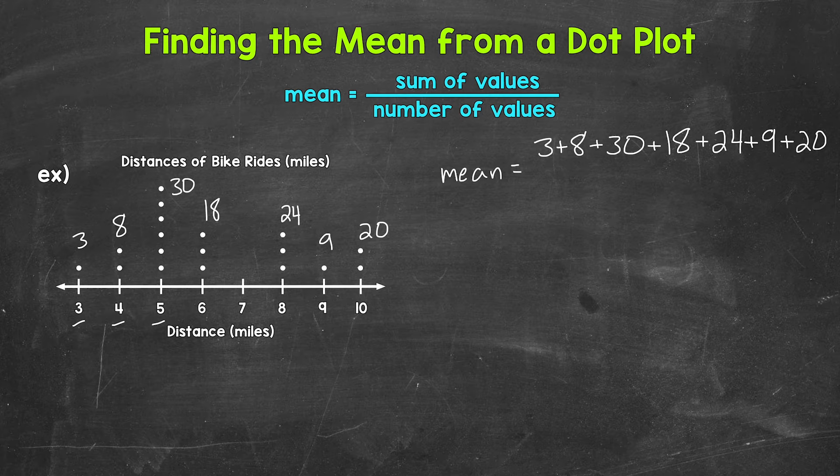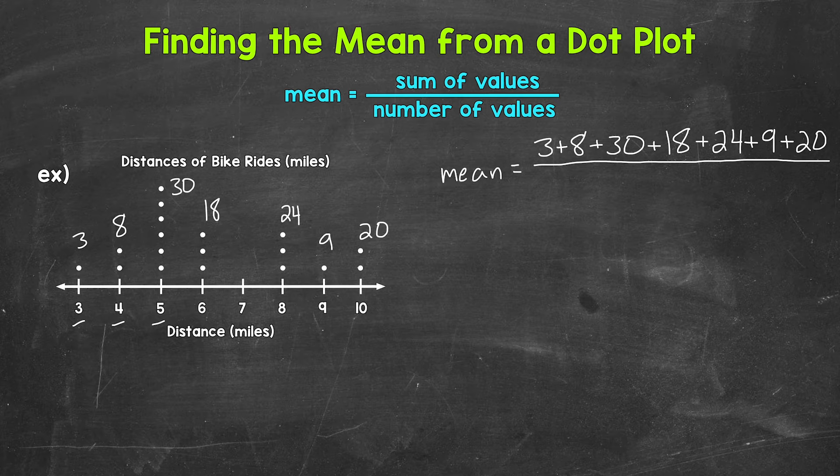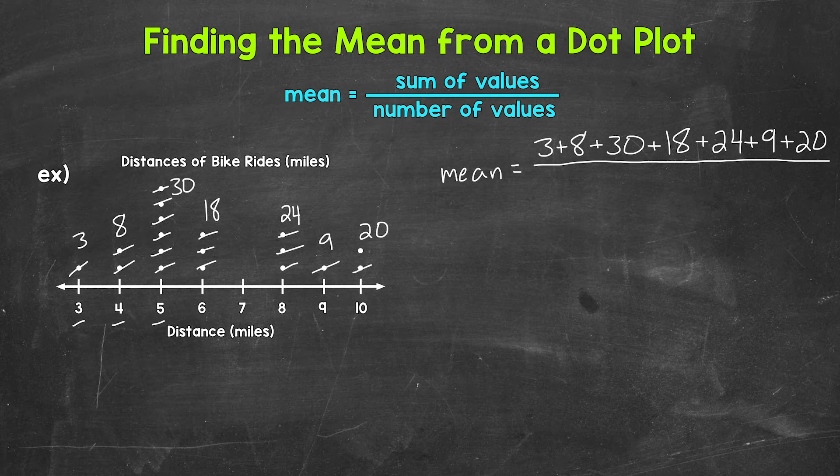Now we need to divide by the number of values. We can figure this out by counting all of the dots. So we have 1, 2, 3, 4, 5, 6, 7, 8, 9, 10, 11, 12, 13, 14, 15, 16, 17, 18. So we need to divide by 18.